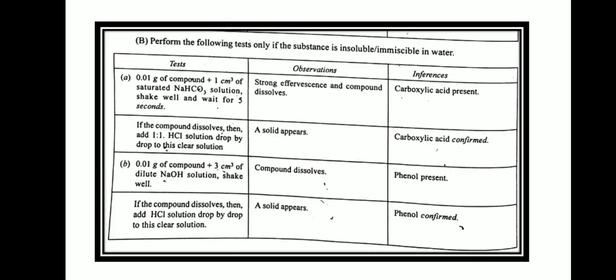If the compound is not soluble in water, perform table B. Take 0.01 gram of compound, add 1 ml of saturated sodium bicarbonate solution, shake it well and wait for 5 seconds. Strong effervescence with compound dissolving means carboxylic acid is present. If the compound dissolves, add 1:1 HCl solution drop by drop to the clear solution — if a solid appears, carboxylic acid is confirmed.